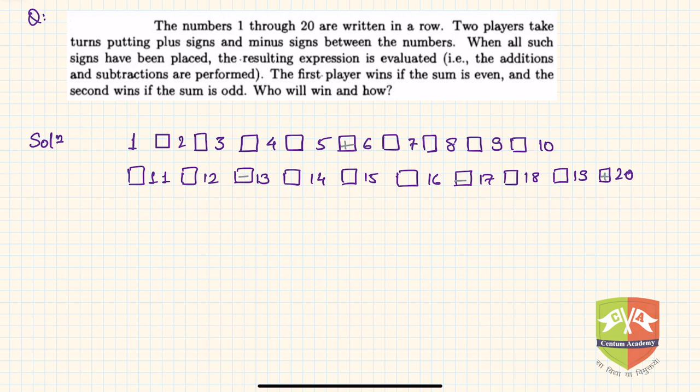Now if you see, how many even numbers are there here? There are 10 even numbers. So basically there are 10 even numbers and 10 odd numbers, isn't it?